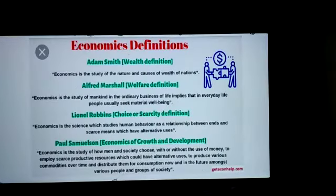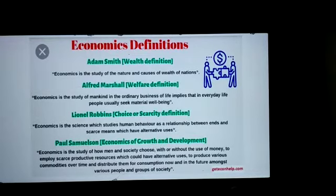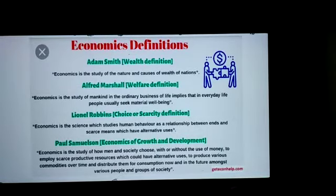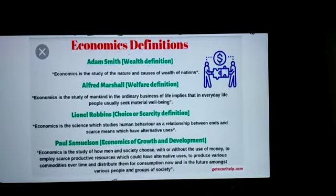Let us now understand the definitions of economics presented by various economists. The first is Adam Smith. The first ever effort to define the scope of Western economics was made by Adam Smith in his book An Enquiry into the Nature and Causes of Wealth of Nations, or the short name Wealth of Nations. According to Adam Smith, economics is the science which studies the activities connected with production, consumption, and exchange of material wealth. He introduced economics as a social science.